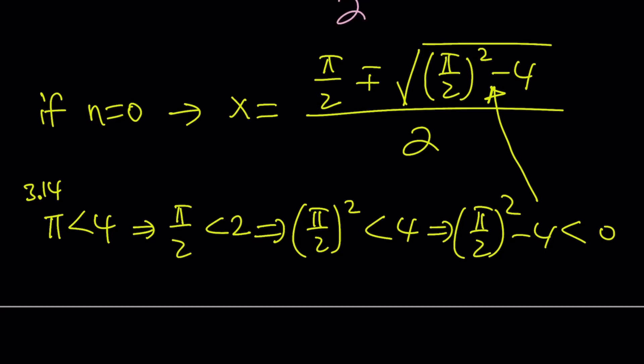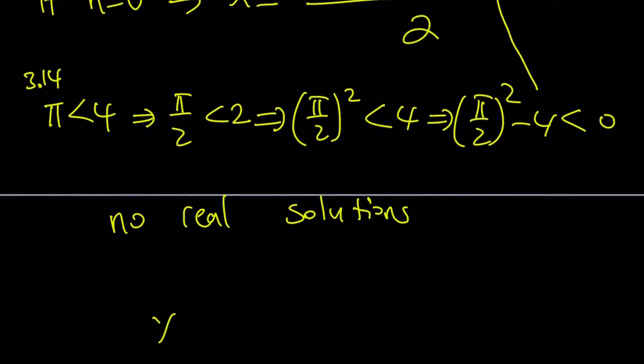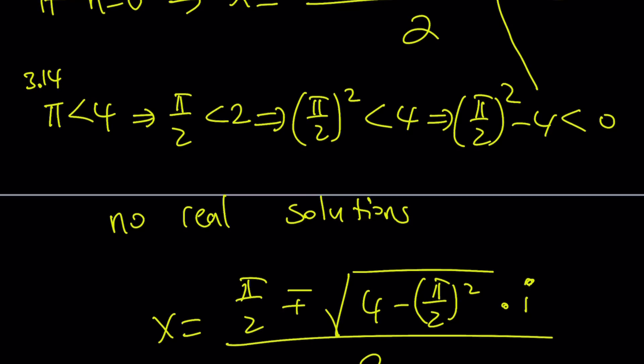So if n is equal to 0, you get no real solutions. Can you find complex solutions? Absolutely. How do you find them? You can basically find them like this. You negate the inside. Because that's going to be a positive version. In other words, like absolute value. And then multiply by i on the outside. And you're good to go. So these are going to be complex solutions.